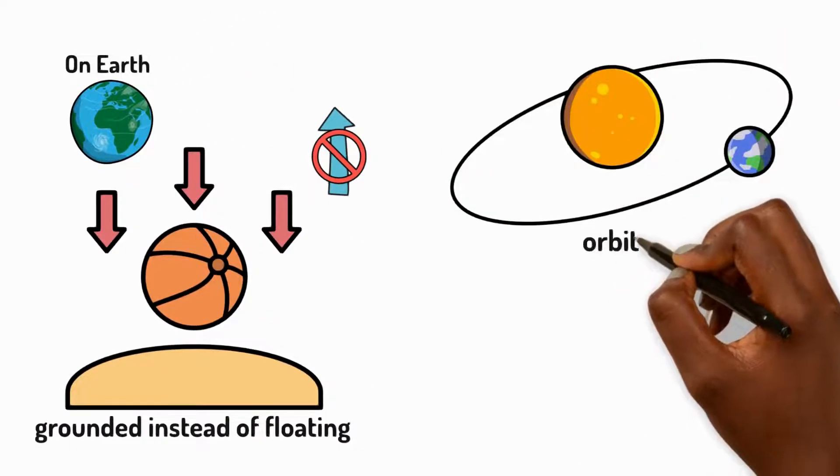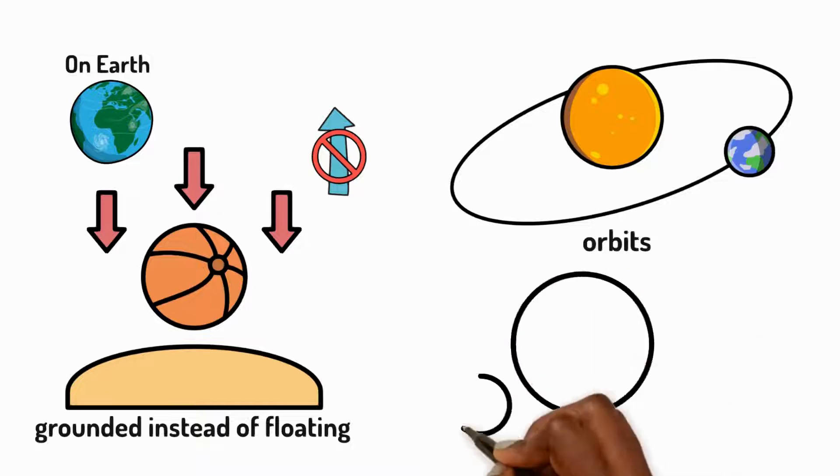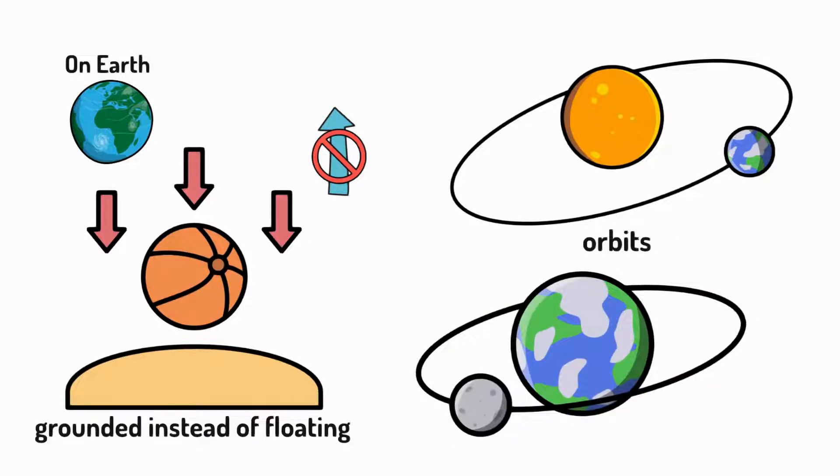Gravity also explains orbits. It causes planets to revolve around the Sun without flying off. The Moon also orbits Earth due to gravity too.